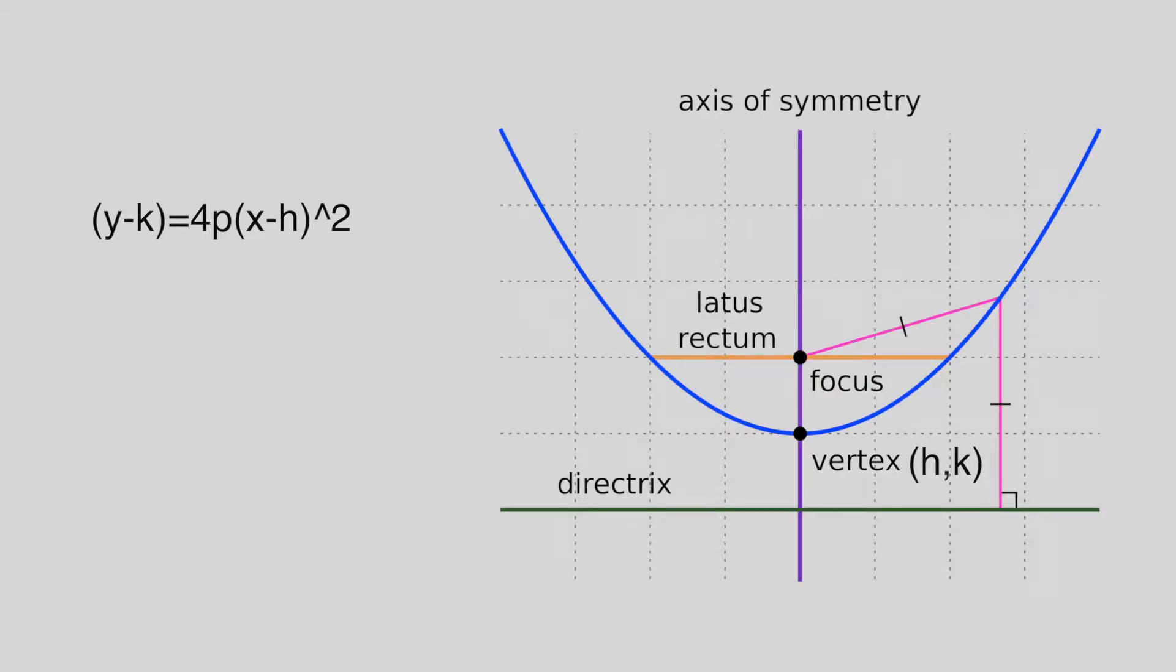What we gon' cover next is something called the vertex. That k go with the y and that h go with the x. Write it down on your chest and you never get an F. Let me teach you all the steps and you're gonna be the best.